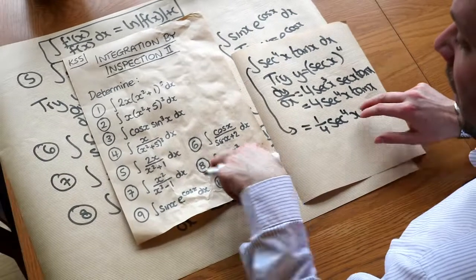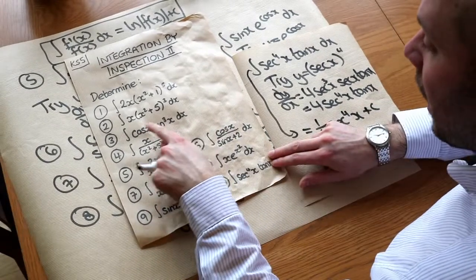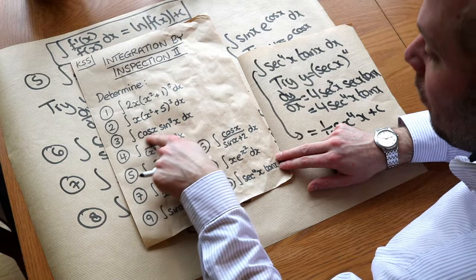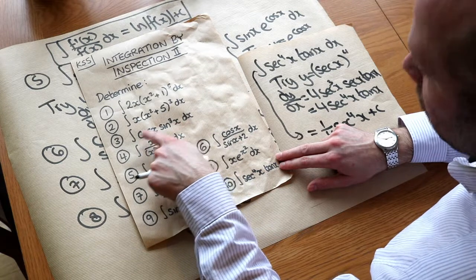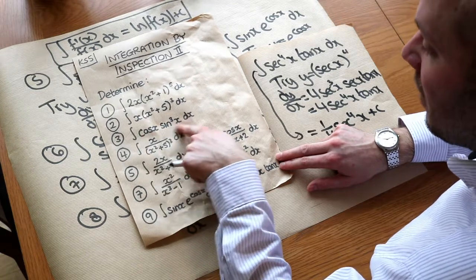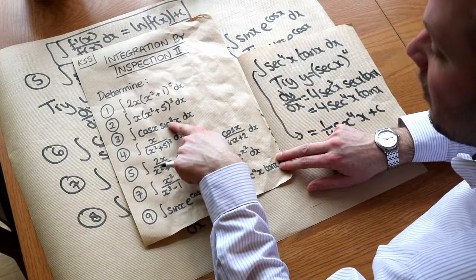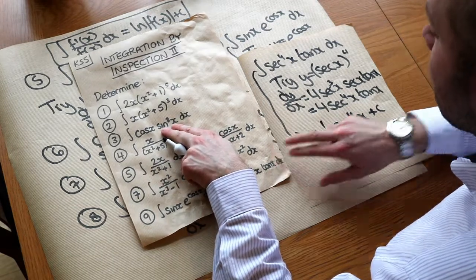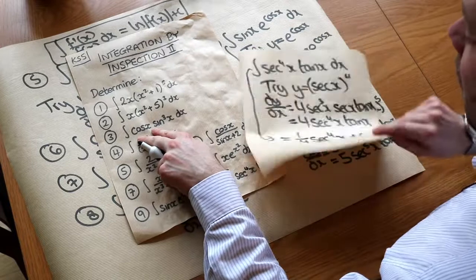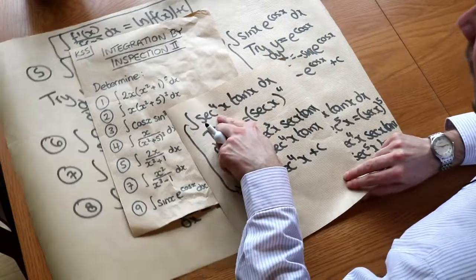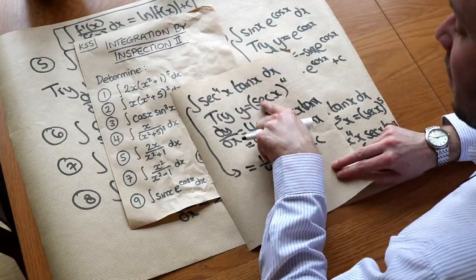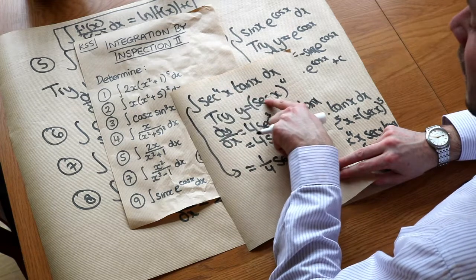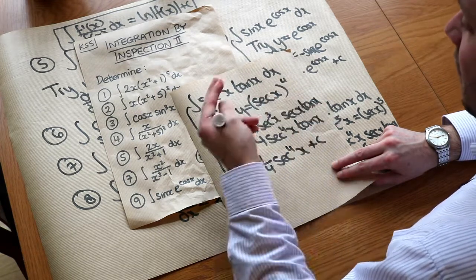To summarise: if you have sin(x) or cos(x) to a power with the opposite trig function on the front, you try the trig function with one power higher. But if you have sec to a power with tan attached, you try sec with the same power — as we used sec⁴(x) in this case.